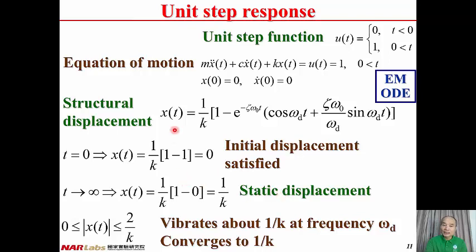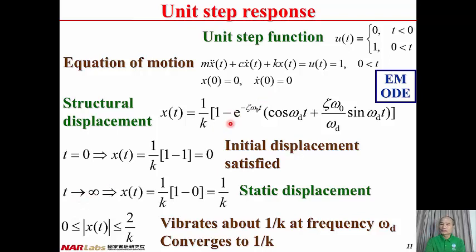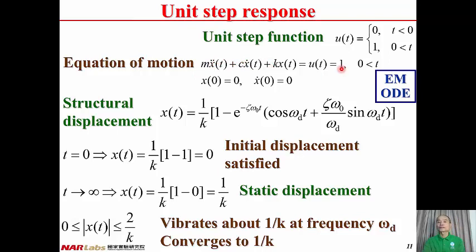Verification: when T = 0, e^0 = 1, cos(0) = 1, so X(0) = (1/K)(1−1) = 0, satisfying initial displacement. When T tends to infinity, the exponential term vanishes, so X(t) → 1/K, which is the static displacement of the structure. If the force is applied very slowly, there is no velocity or acceleration, so Kx = 1 gives x = 1/K — confirming 1/K is the static displacement.